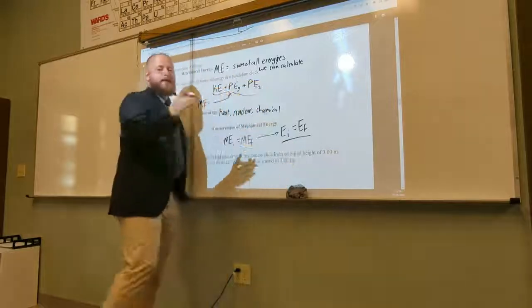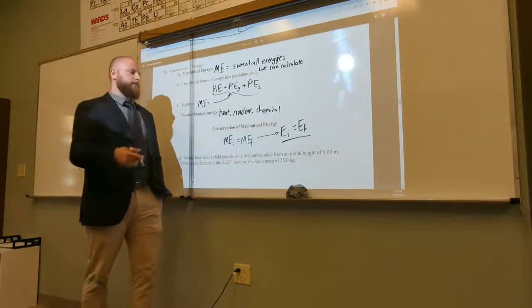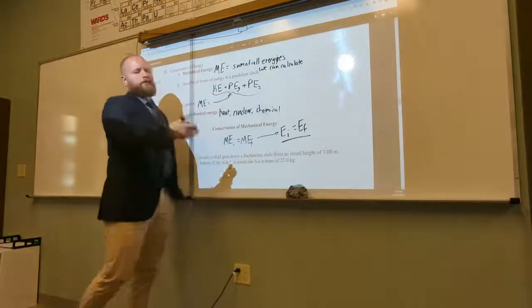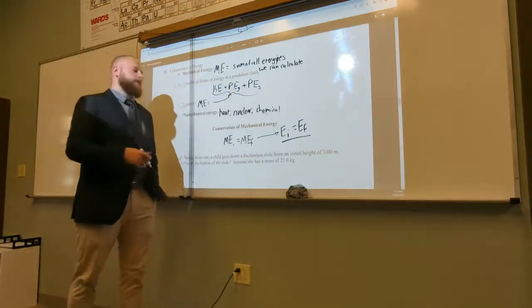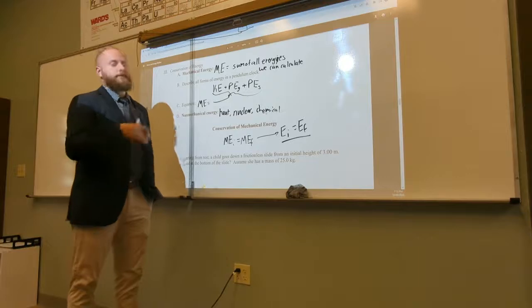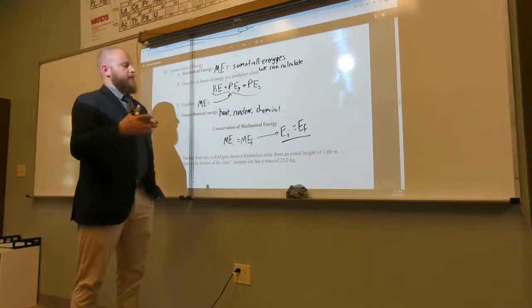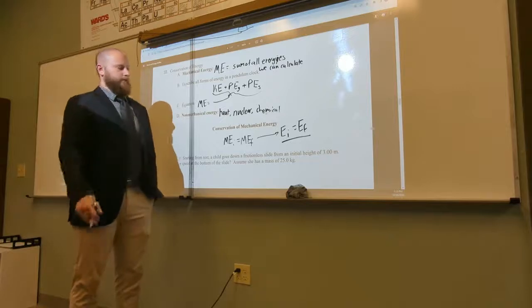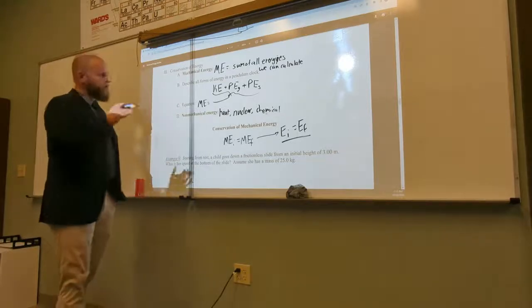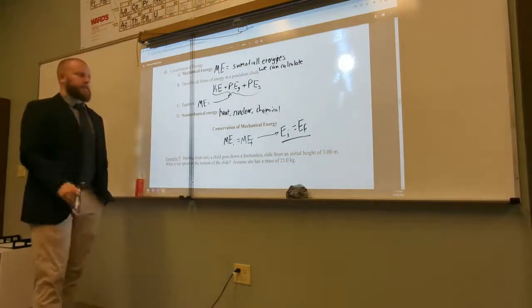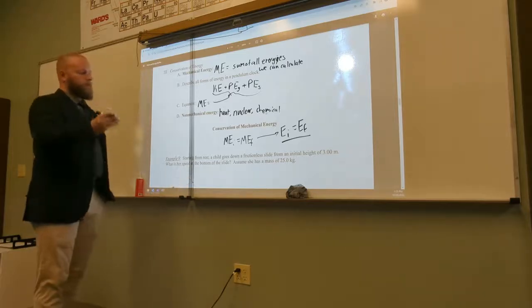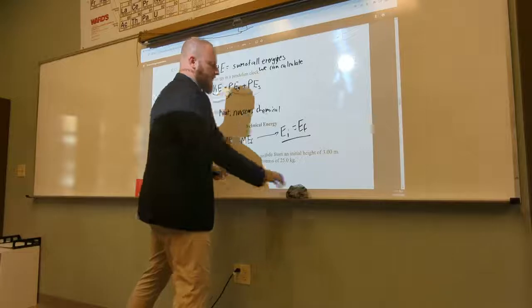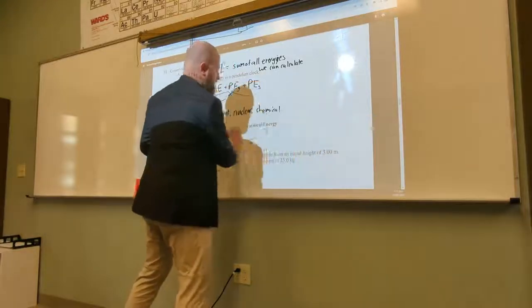And for AP, oftentimes, just writing this can end up being a point. So it's really important that if you're doing an energy conservation question, you're really starting with that. You're showing me or another person grading your work that you know that this is a conservation of energy question. So now that we kind of have this basic idea, let's actually look at what does this look like? How do we actually do this? This is our basic setup, but how do we actually solve a problem?